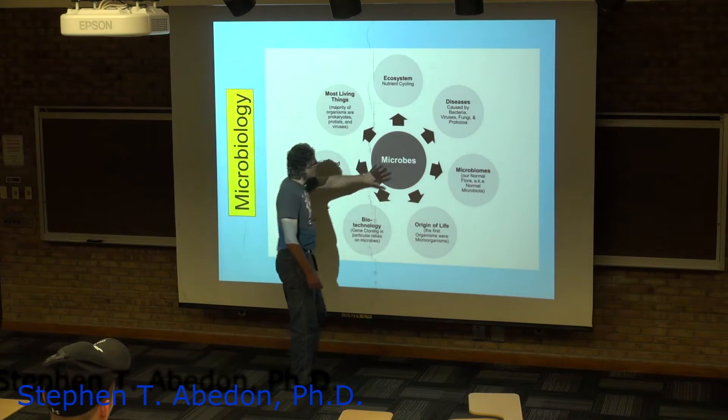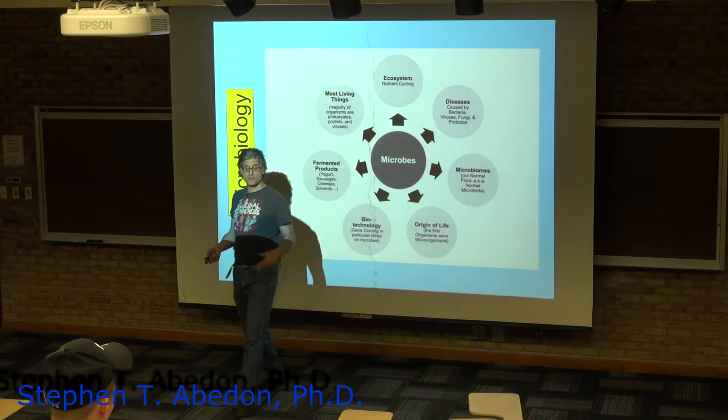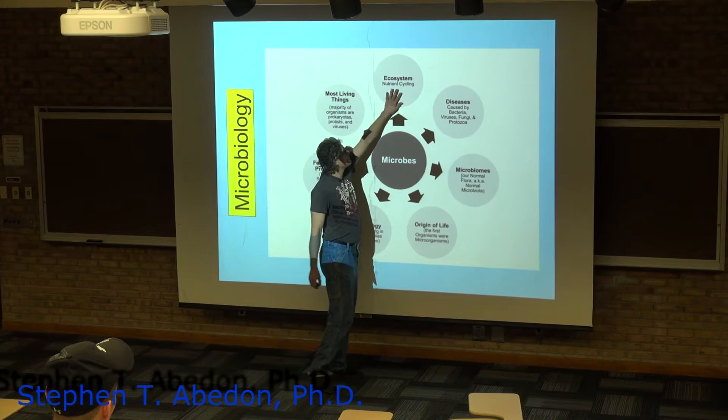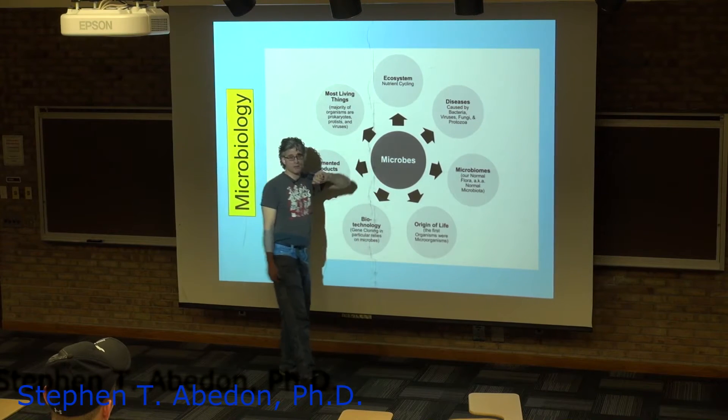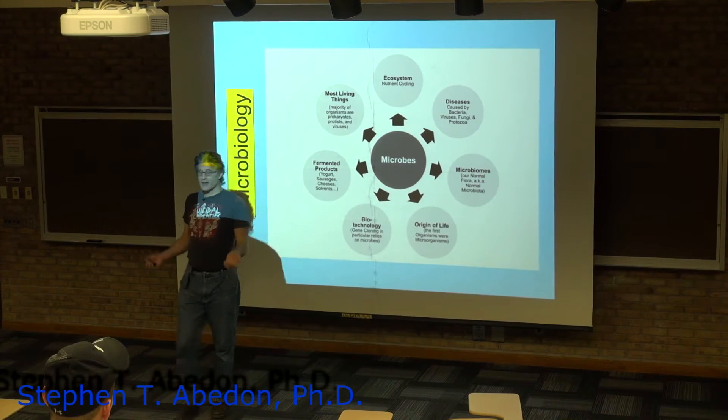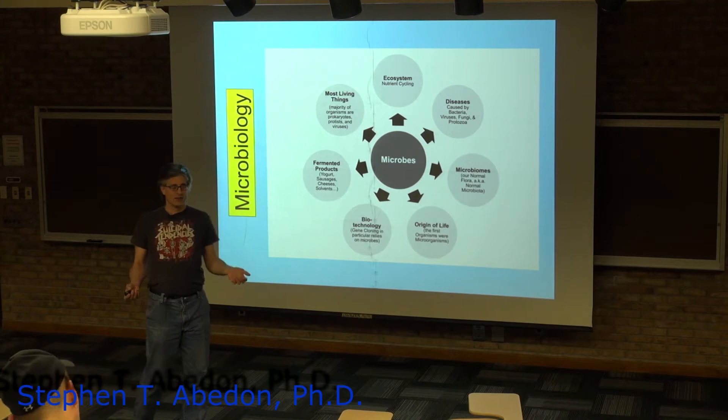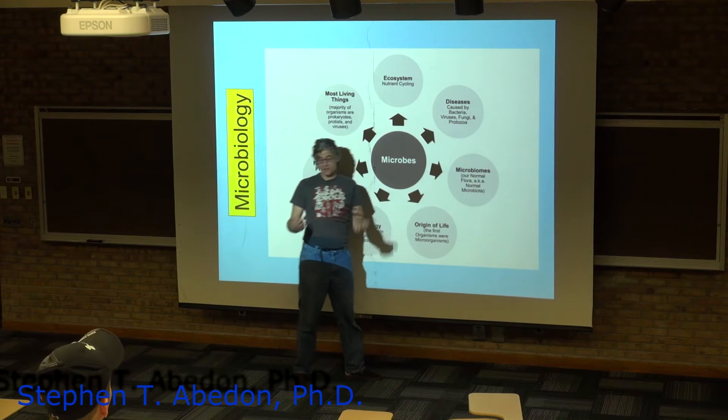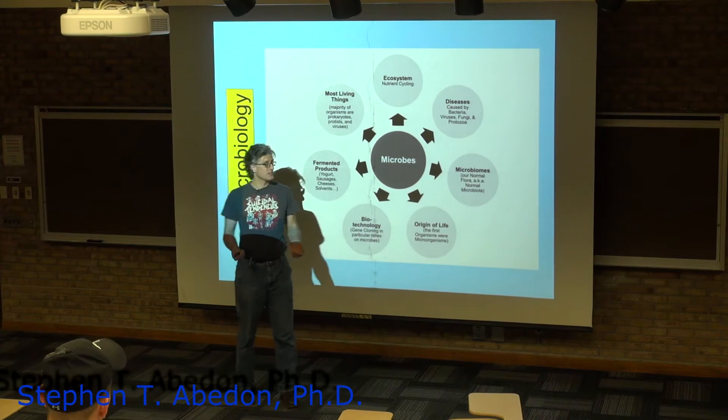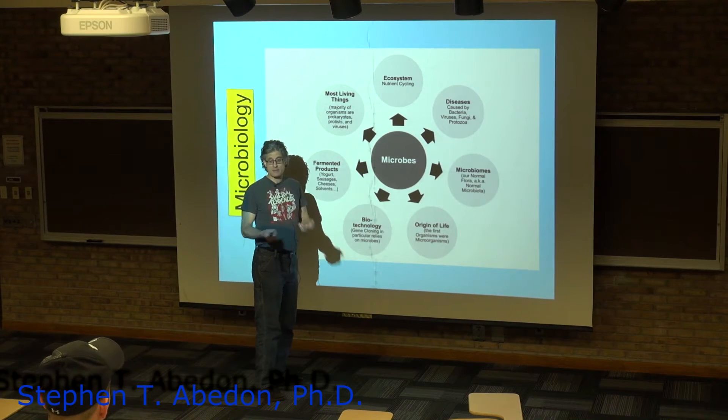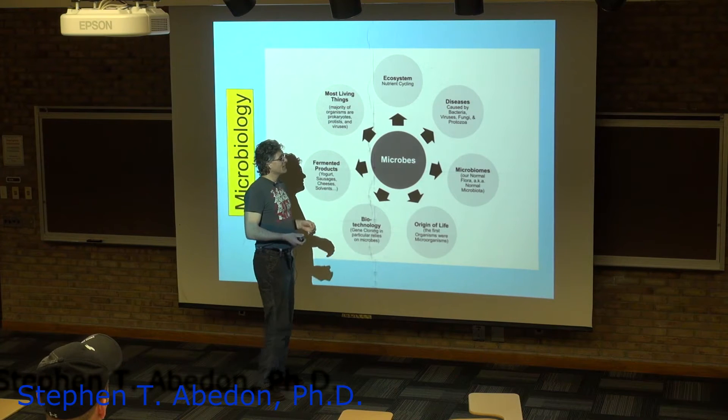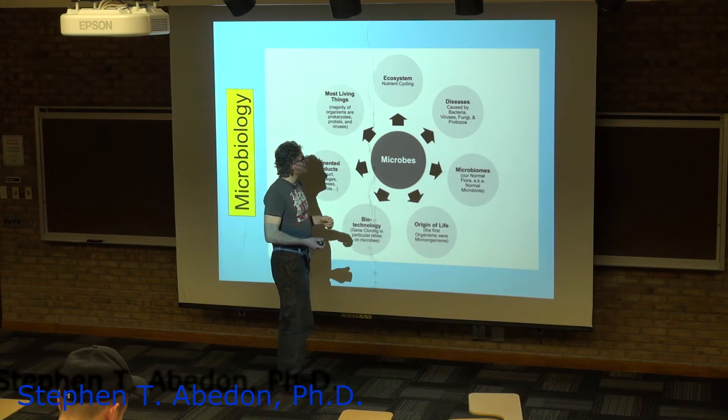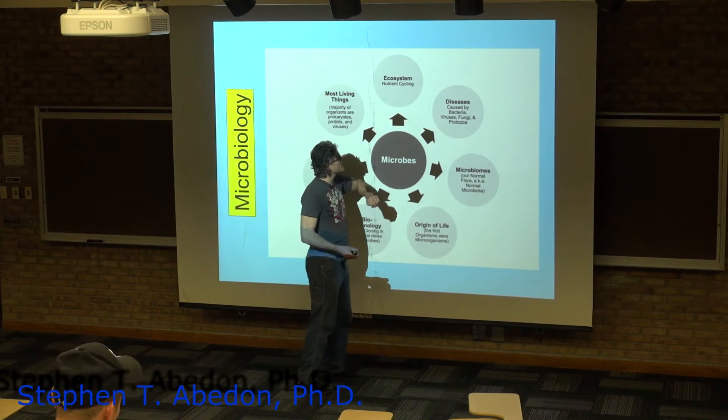Then we can consider what microorganisms are good for or bad for. Microorganisms are crucial in nutrient cycling in ecosystems. You get rid of the microorganisms, you don't have any decay anymore. If you don't have decay, then you lock up essential elements into the dead matter in ecosystems and the ecosystem stops being able to function because basically the ecosystems need the recycling of elements within them and the microbes are crucial for that recycling.